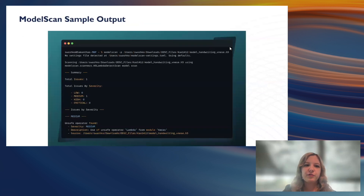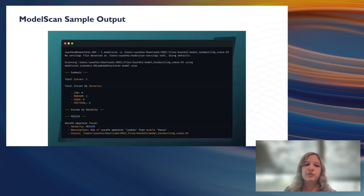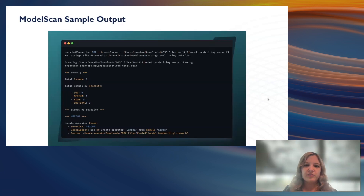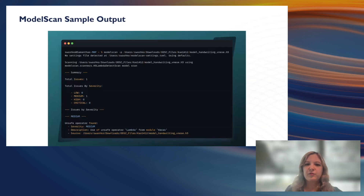Here's a sample output for ModelScan. It's very easy to use both as a Python SDK and as a CLI tool — you just pass it the file path. By default, it gives you a console human-readable format listing the issues found and ranking them by severity. This is an example of one where it found a lambda layer that includes arbitrary code in a Keras file. It's also possible to use JSON or to modify the tool to have a custom reporting format for whatever you need, or to update scanners or add your own scanners. It's very configurable through a settings file to be easily used within a CI/CD workflow to automatically scan models.